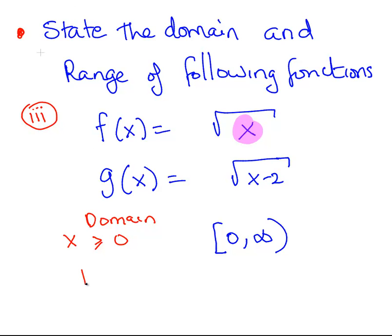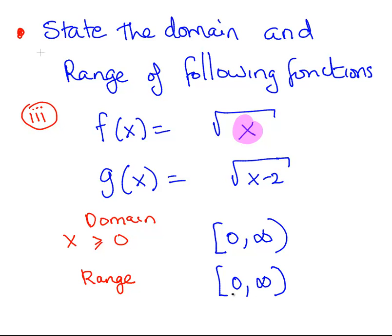The range: we are going to get a non-negative number out of this. For inputs 0, 1, 2, 3, 4 we get their square roots; if we have an input of 10 we get the square root of 10 as our output. The range is similarly 0 to infinity — we can get 0 inclusive, indicated by the square bracket, or any number above 0 on the number line. So that's the domain and range for f of x equals the square root of x.